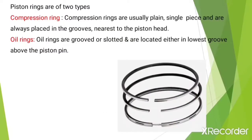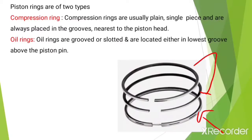There are two types of piston rings. Compression rings are usually plain single-piece rings, always placed in the grooves nearest to the piston head — the first two rings are compression rings. Oil rings are slotted and located in the lowest groove above the piston pin.